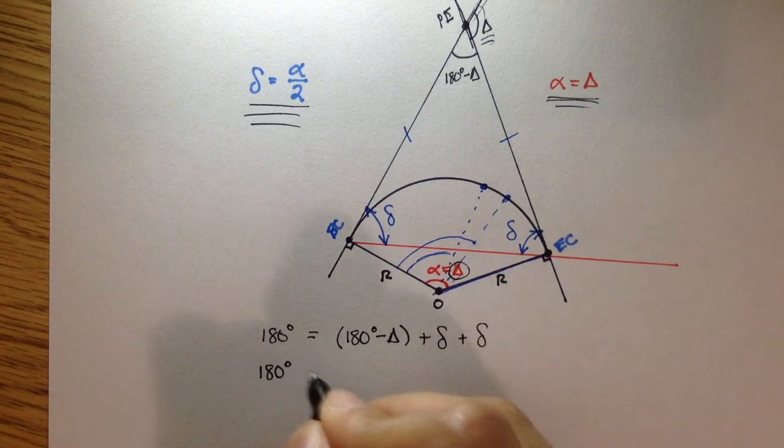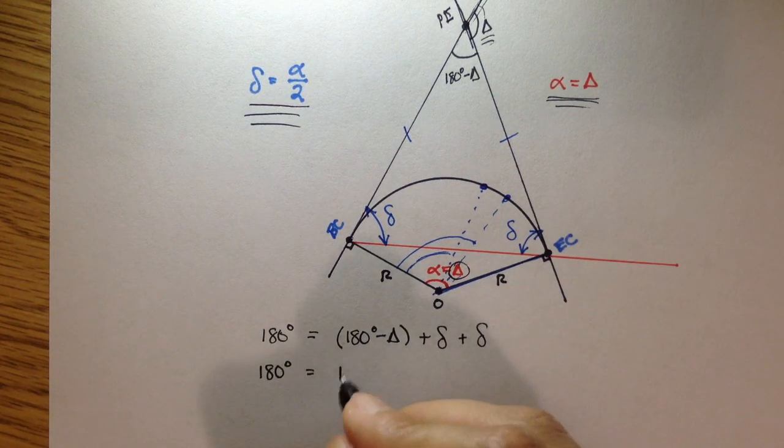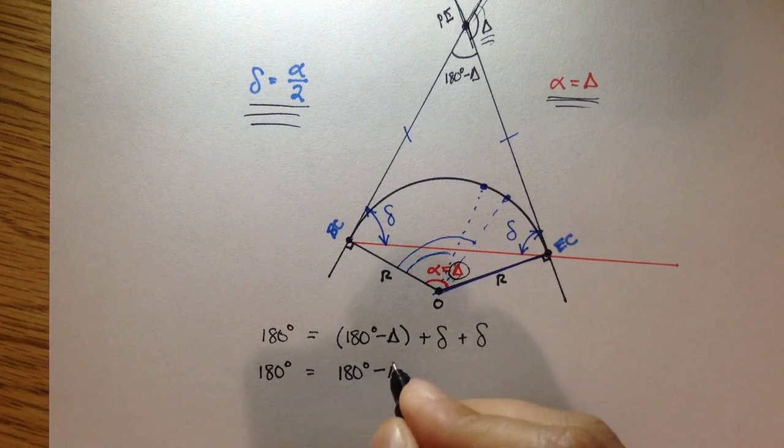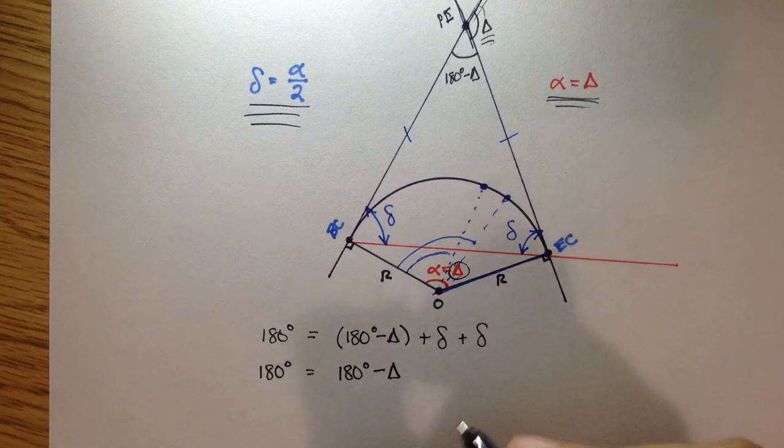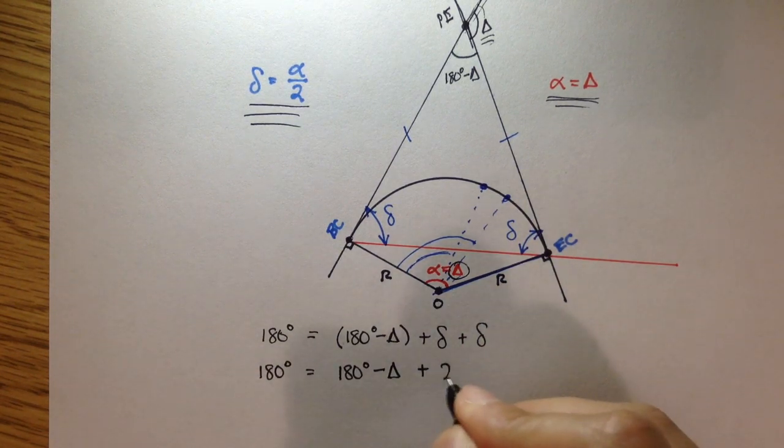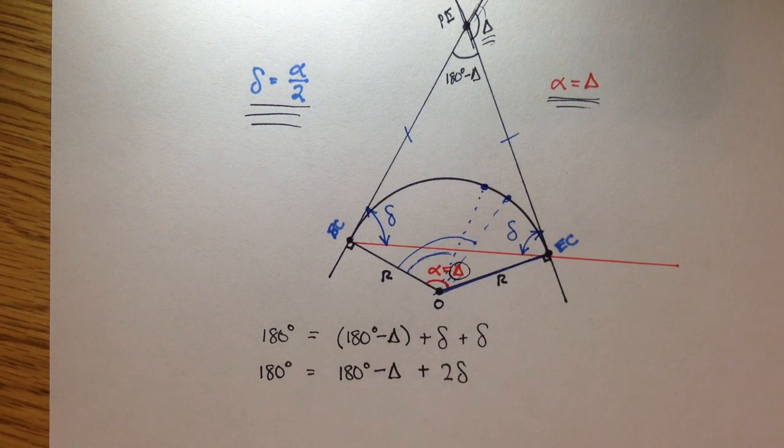So, if I simplified this a bit, I'd have 180 degrees is equal to 180 minus big delta, or your interior angle, plus 2 delta, 2 lowercase delta, your deflection angle.